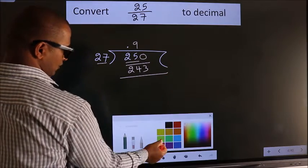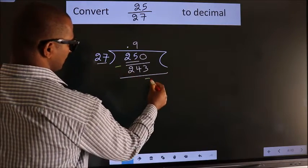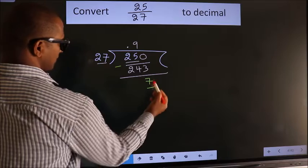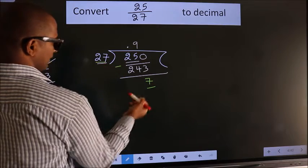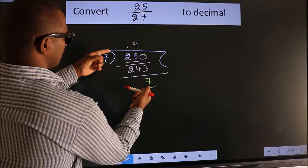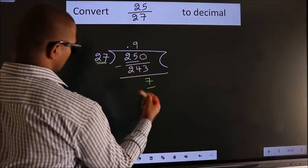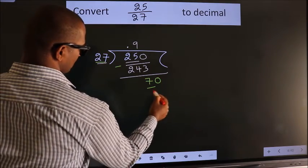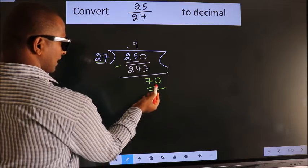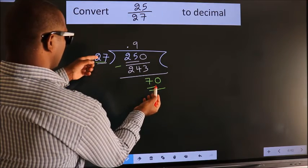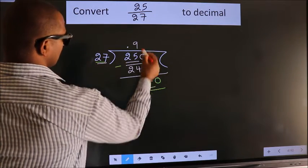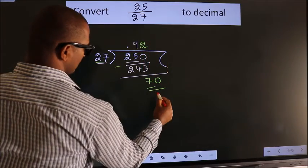Now we subtract. We get 7 here. 7 is smaller than 27. We already have the decimal, so directly take 0. So 70—a number close to 70 in the 27 table is 27 times 2, which is 54.